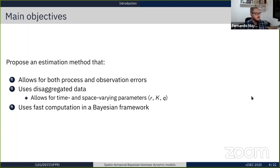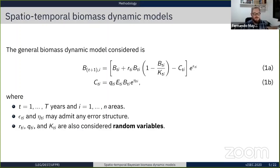More specifically, we considered a general form of the biomass dynamic model, including not only time indexes but also area indexes. We also included both process and observation multiplicative errors, and we treated the parameters r, q, and K as random variables over time and space.